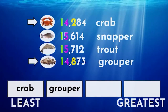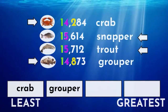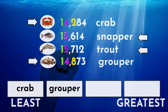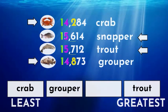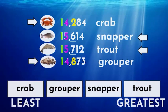Since we already found crab and grouper, we need to compare the trout and snapper to find out which has the greatest value. Since both have a one in the ten thousands and a five in the thousands, we must compare the hundreds place again. It appears that the trout has the greatest value since seven is greater than six, and that leaves the snapper as the next greatest.